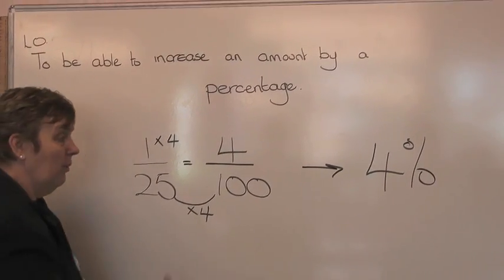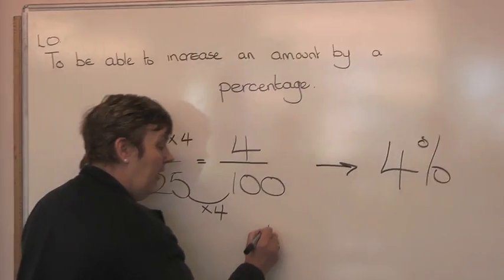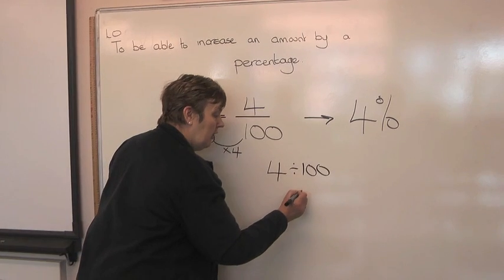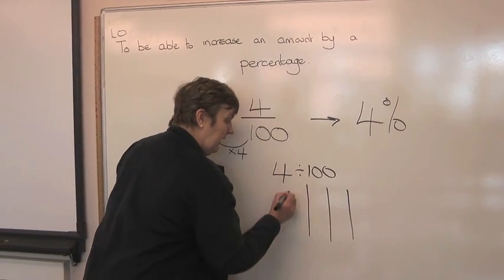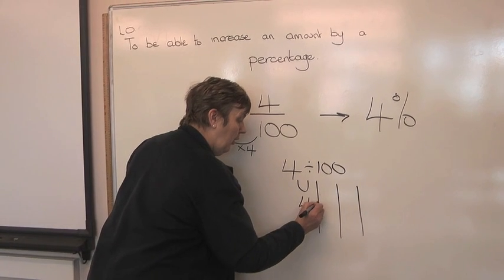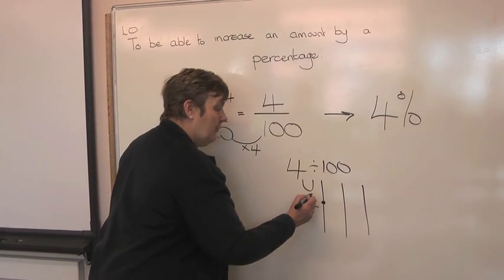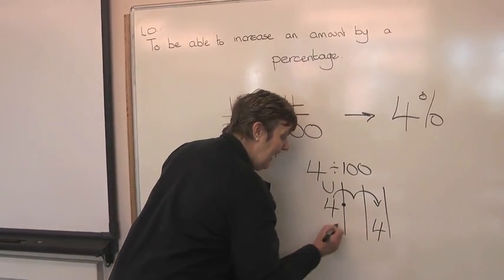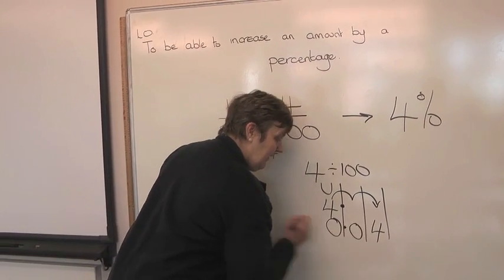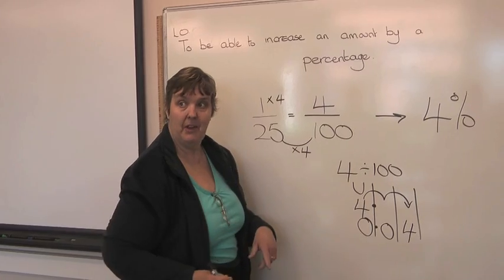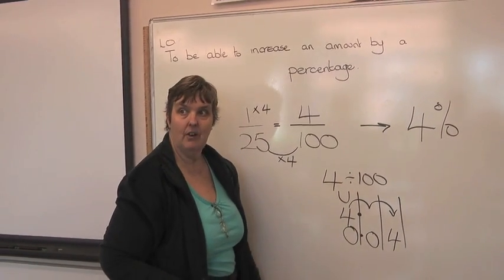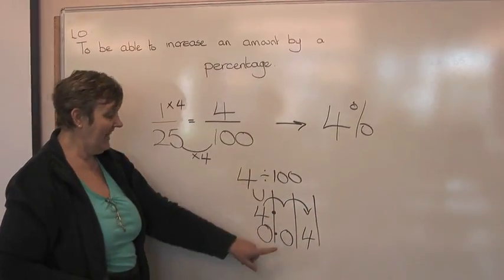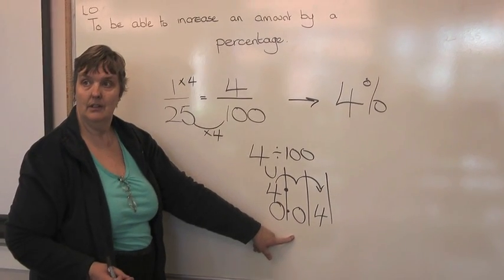What about that into a decimal? I know — that line means divide. 4 divided by 100. Then we've got the columns. Units, where I'm going to put the 4. But when I divide by 100, it's got to go back 2 columns. Back 2. Is that okay for you? Can you remember that? 0.04. That's wonderful. So 1/25 is 4 over 100, is 4%, and 0.04.